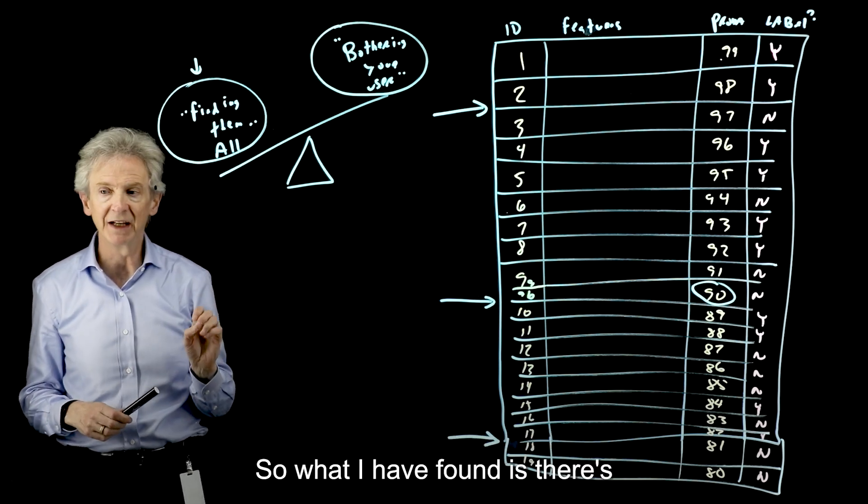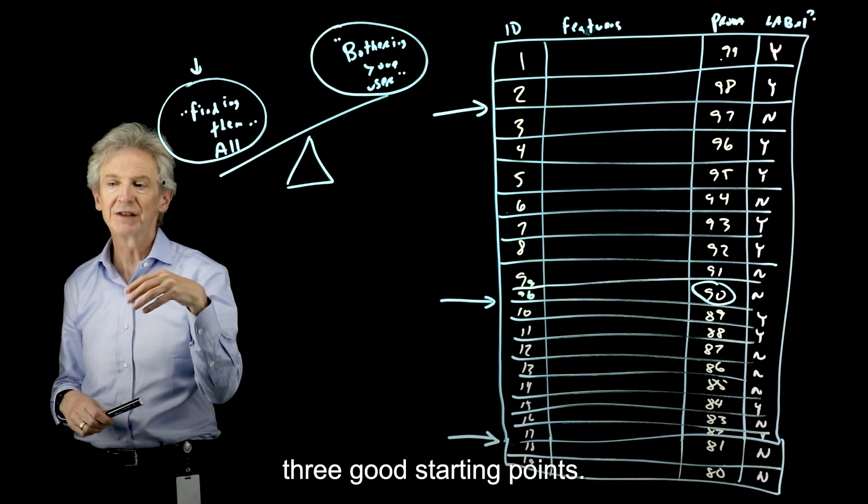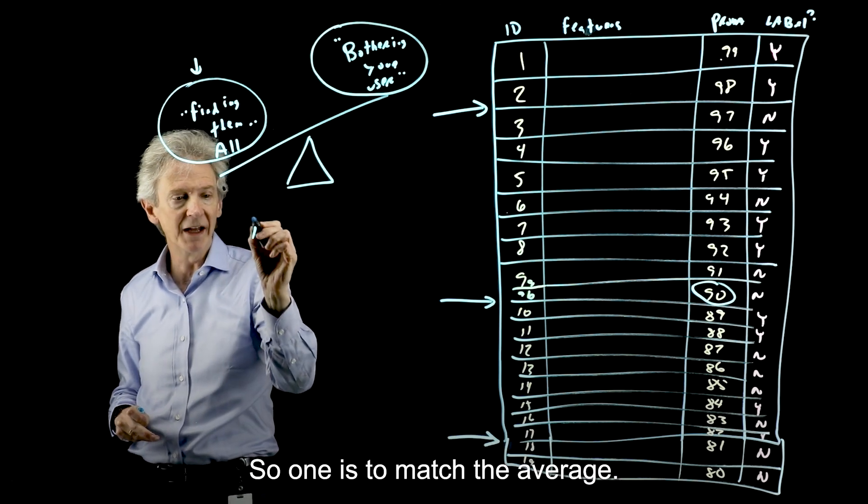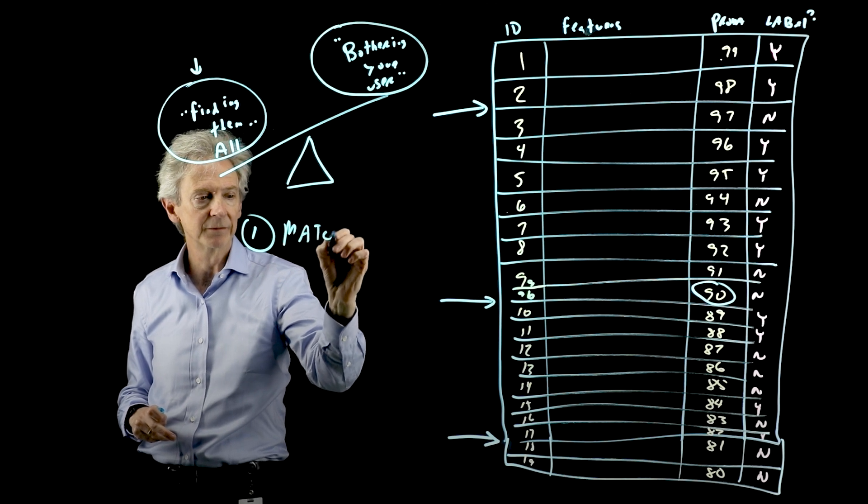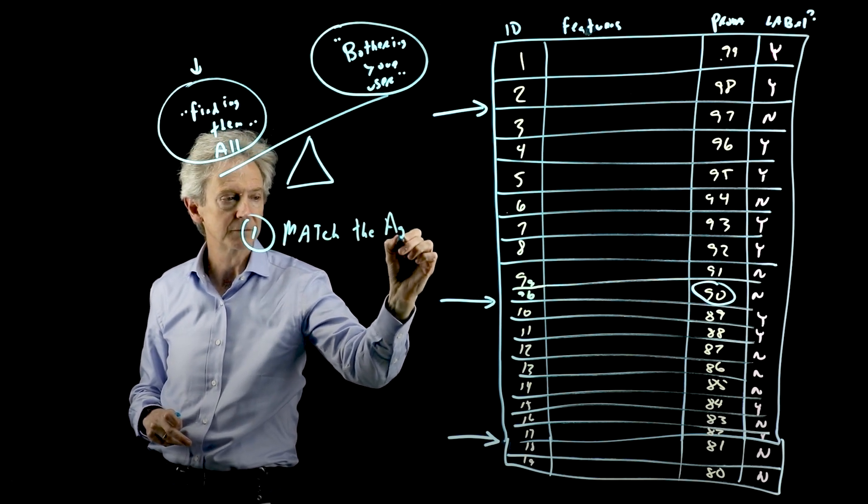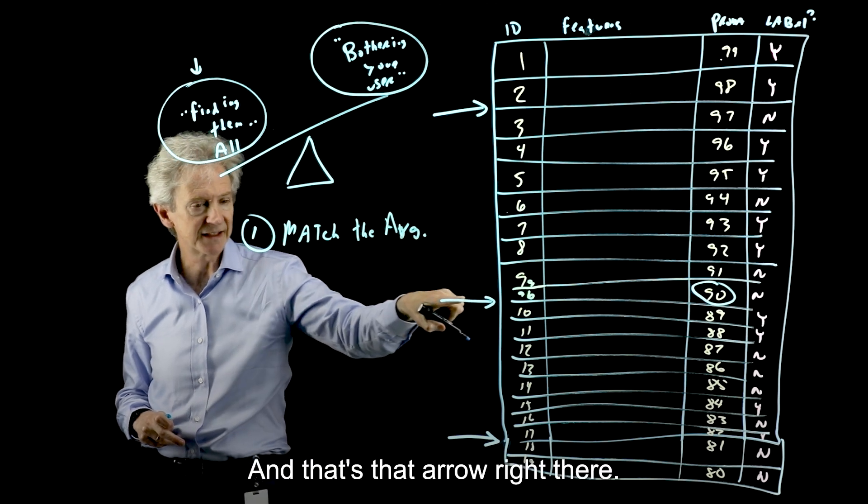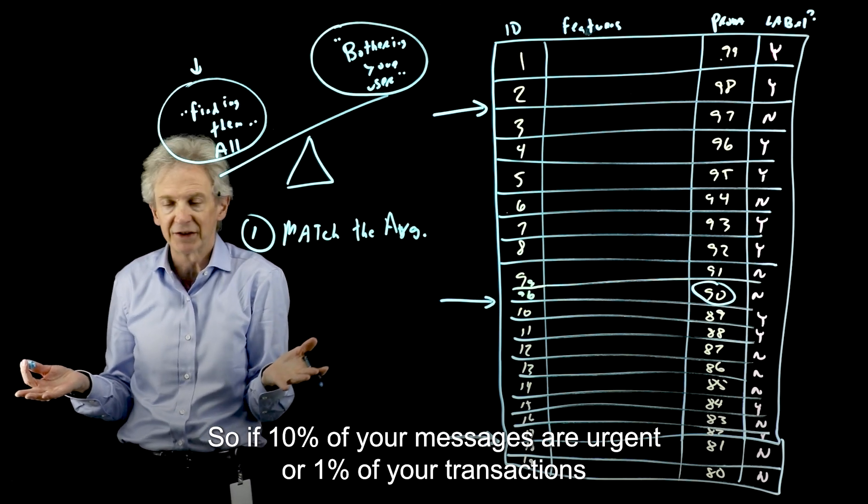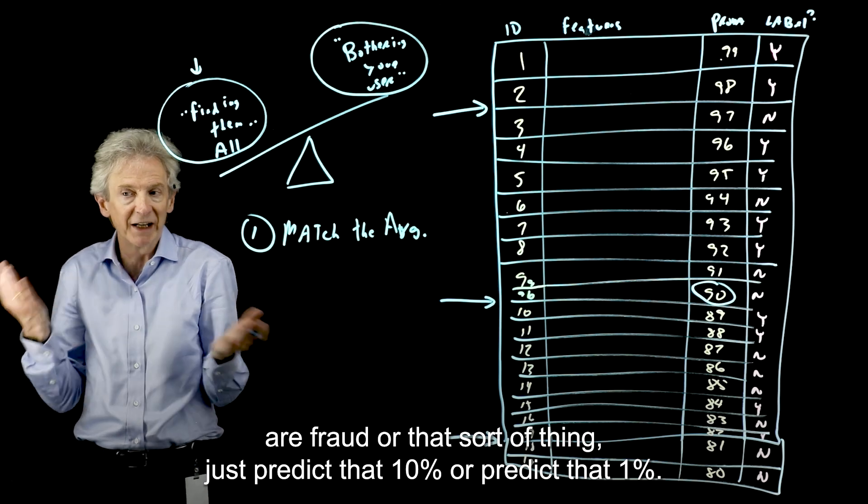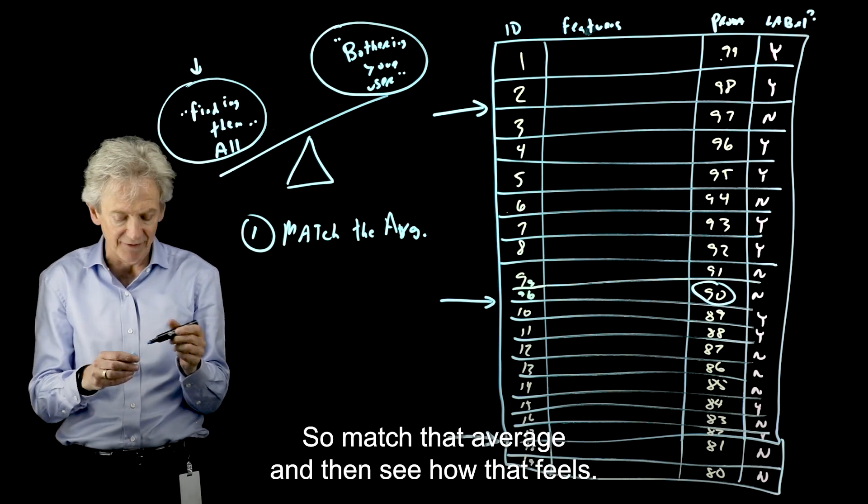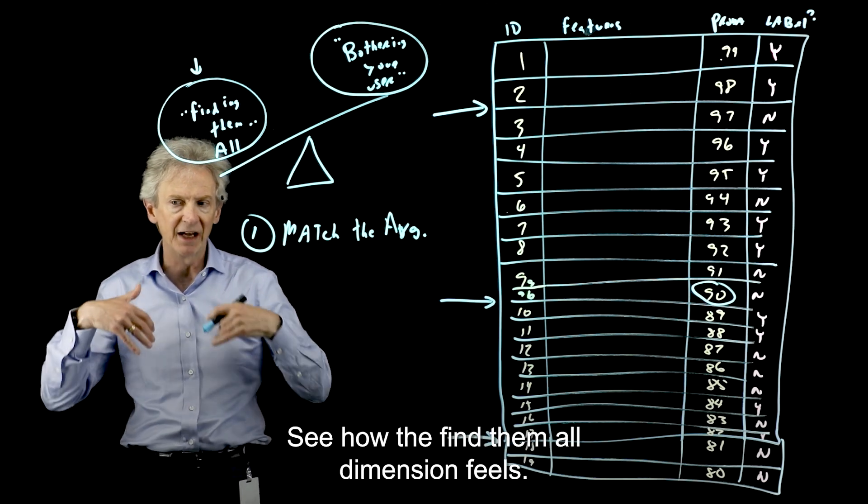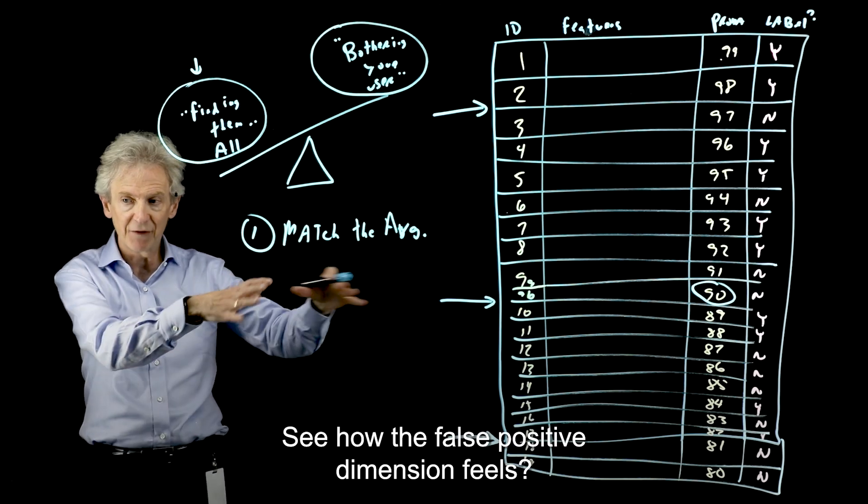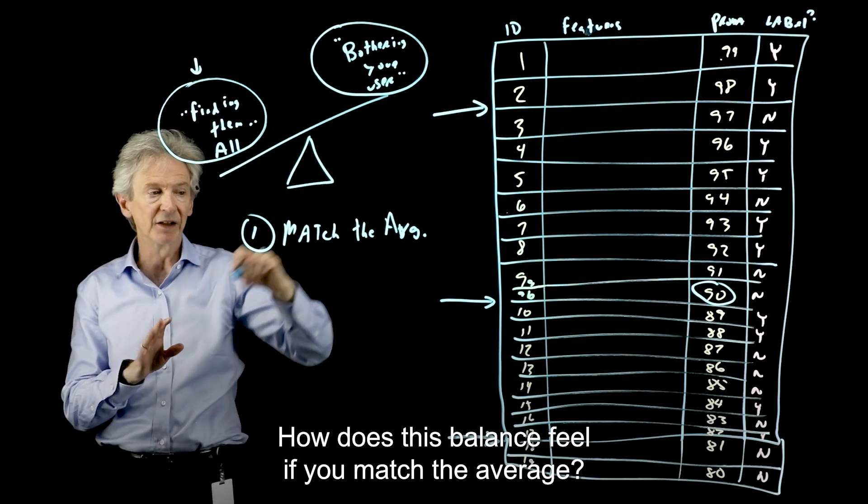So what I have found is there's three good starting points for deciding on a threshold. And then I'll close. That's the last thing I'll talk about. So one is to match the average. And that's that arrow right there. So if 10% of your messages are urgent or 1% of your transactions are fraud or that sort of thing, just predict that 10% or predict that 1%. So match that average. And then see how that feels. See how the find them all dimension feels. What percent are we finding? See how the false positive dimension feels. How does this balance feel if you match the average?